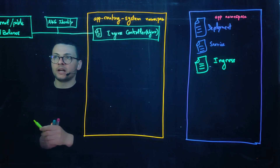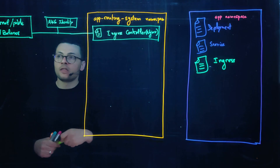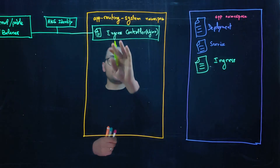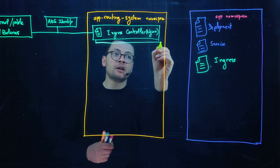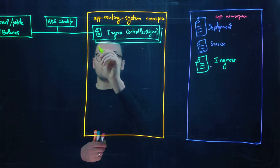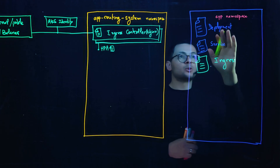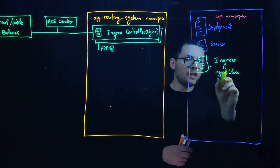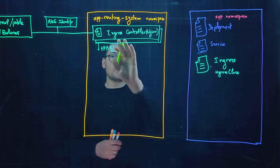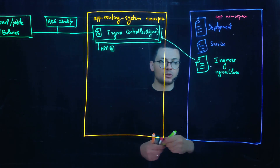The Application Routing add-on manages that ingress controller, including how many replicas are needed, using an HPA to scale it out. From within the application namespace, you simply specify the ingress class name that was created as part of that ingress controller — that provides the mapping between your ingress resource and the ingress controller.